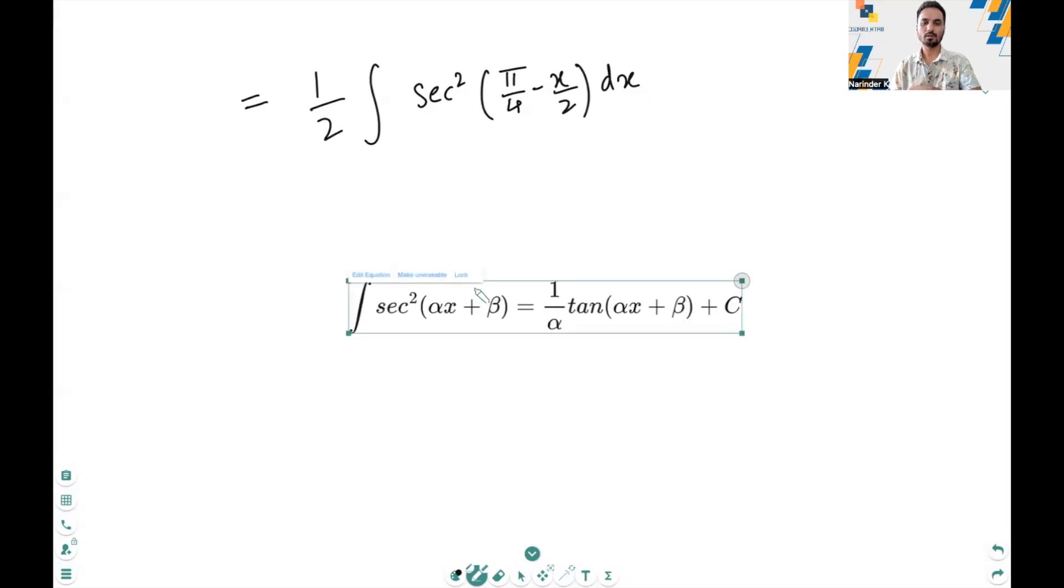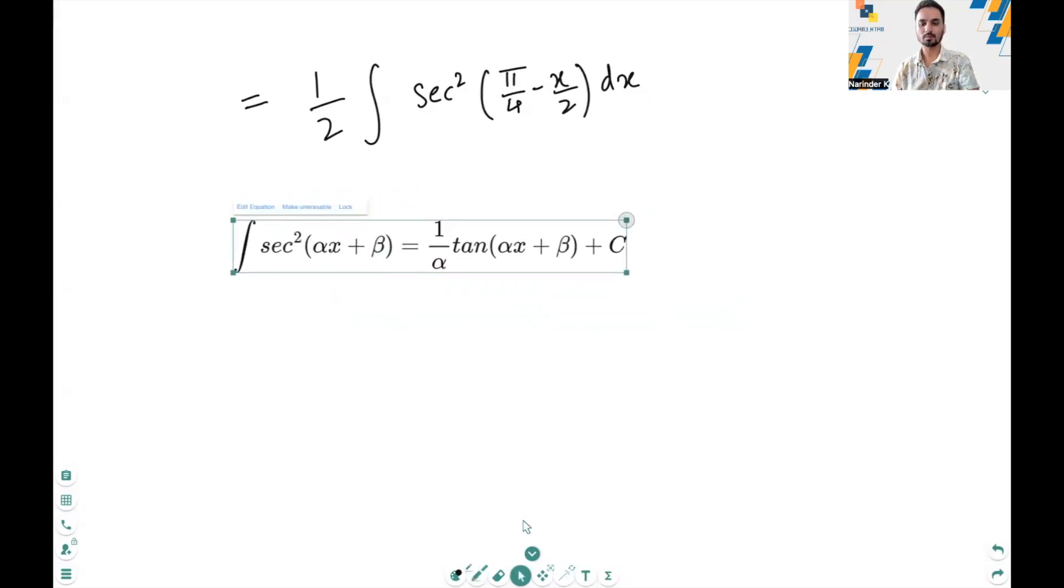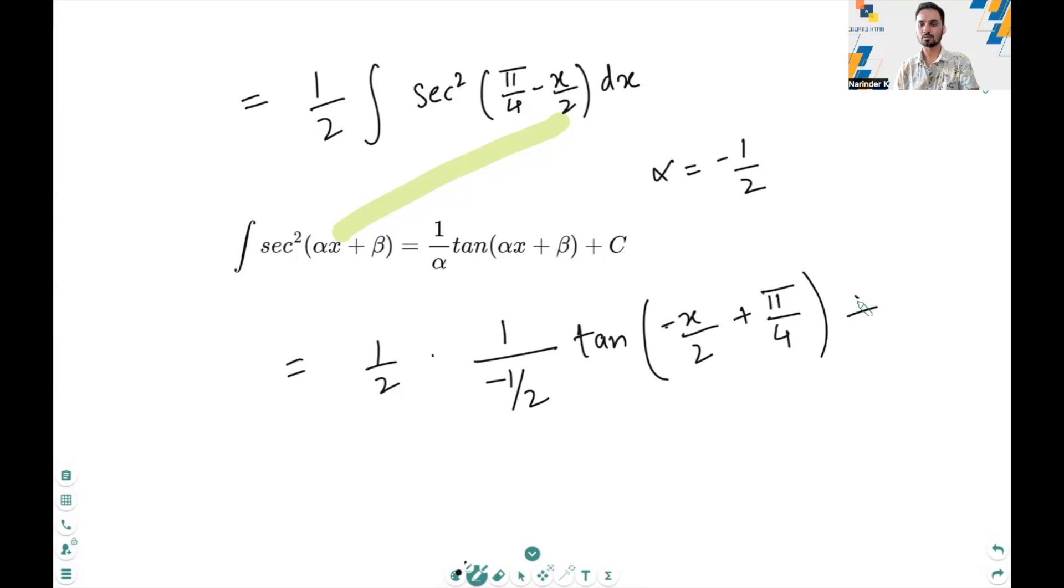Also, we know that the integral of sec square alpha x plus beta is 1 over alpha tan alpha x plus beta. So if you compare these, we will get the value of alpha is minus half. So by applying this identity, the left-hand side becomes half times 1 over alpha, which is minus half tan alpha x plus beta. So tan minus x over 2 plus pi over 4 plus c.